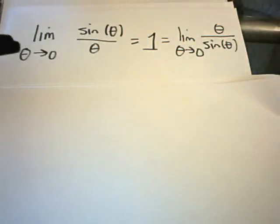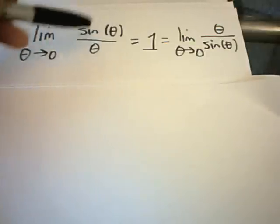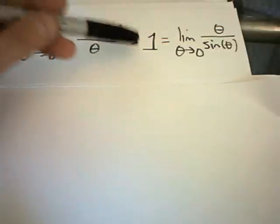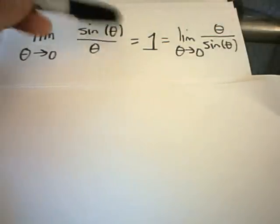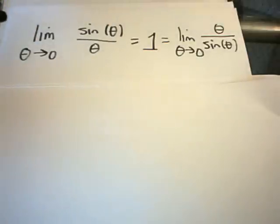Here's another limit problem, and this is a useful limit to know. It's just another one of those random little formulas that are worth memorizing. So it says the limit as theta goes to 0 of sine theta over theta equals 1. And you can actually flip over this fraction and make it into theta over sine theta as well, and still have that equaling 1.